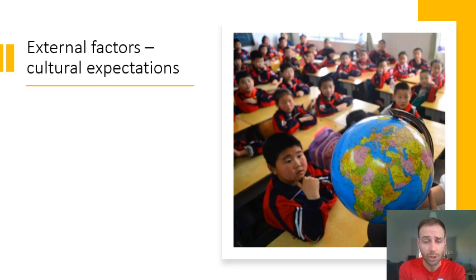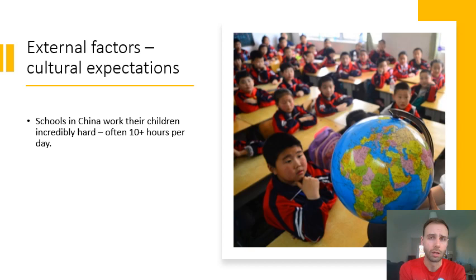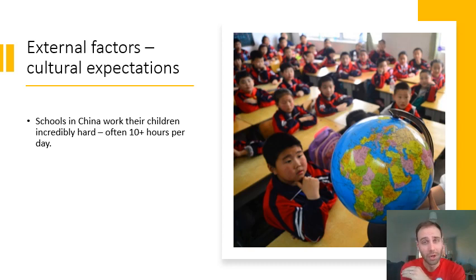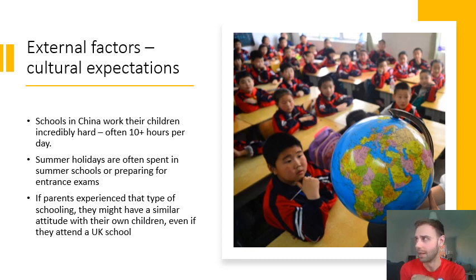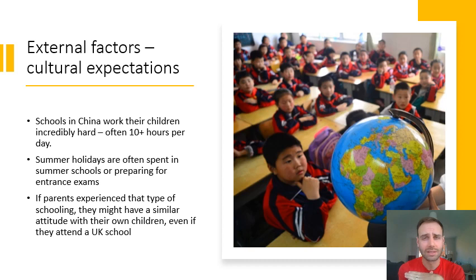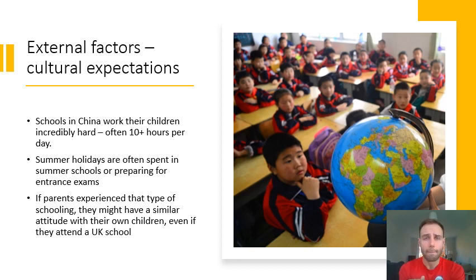We can also see that the UK school system is very different to others across the world. In China, for example, children work very hard — they start school much earlier, finish later, and have more homework at home, sometimes working at least 10 hours a day. Summer holidays can be spent preparing for exams or in summer schools. If a Chinese family has moved to the UK and the parent went through the Chinese school system, that parent might have a similar attitude toward their child's education — getting them to do far more hours of homework than native-born children.